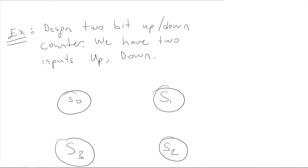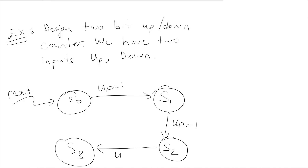We have four states. Assume we have a reset signal, and whenever there is a reset we go to state S0. This reset signal can come from any state, but for simplicity we just show it like this. From here, if we have an up signal (up is 1), we will be going to the next state.